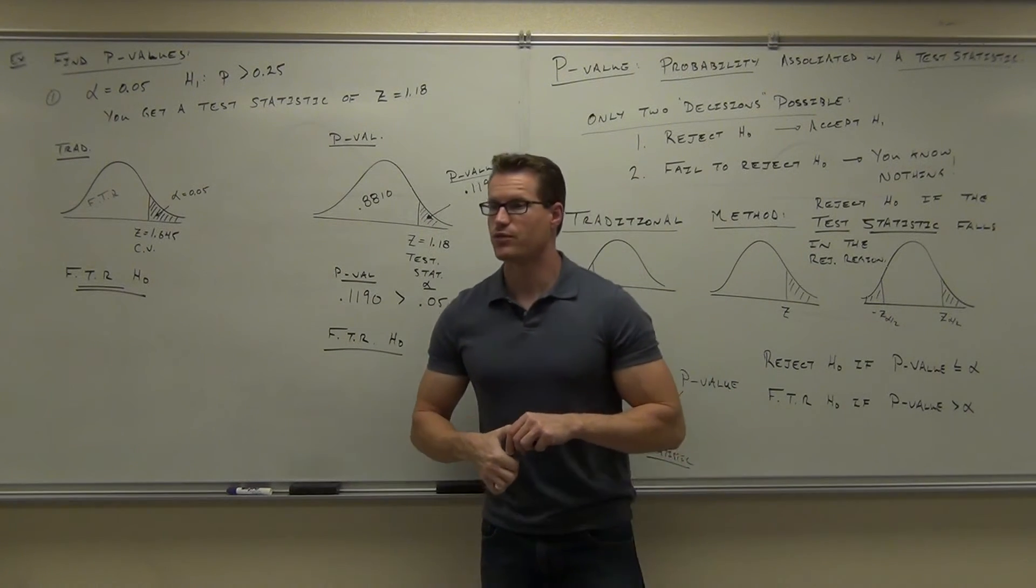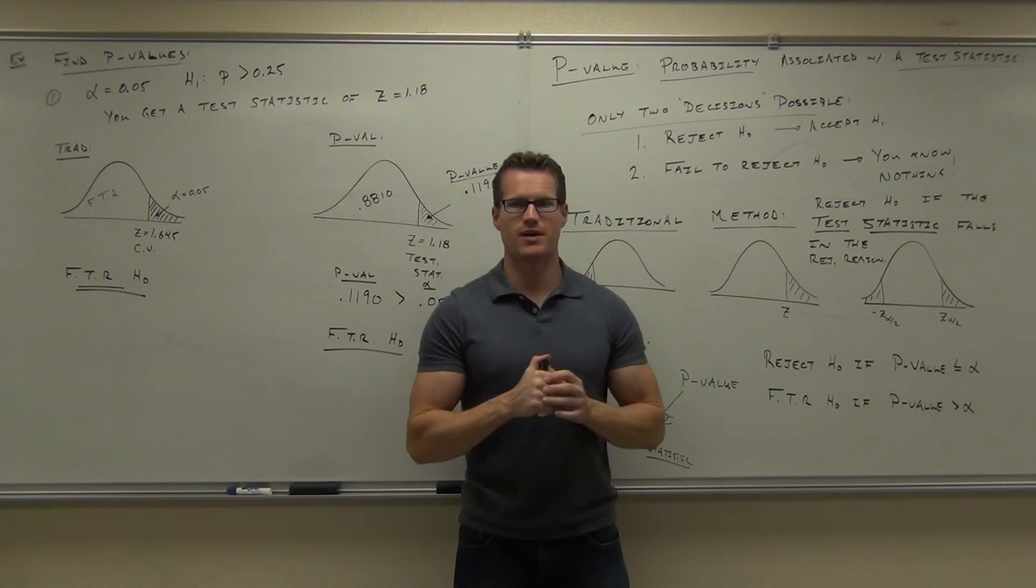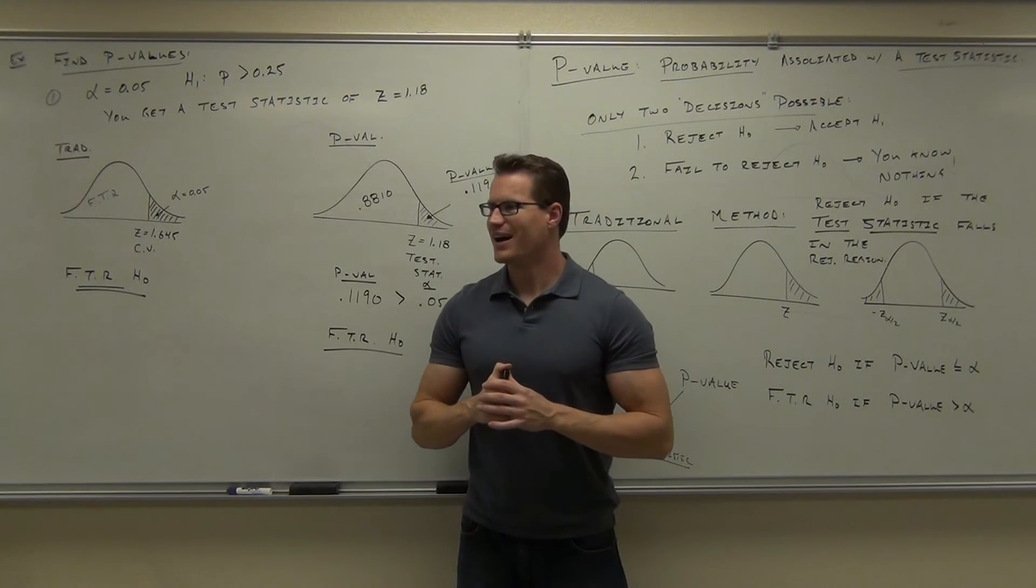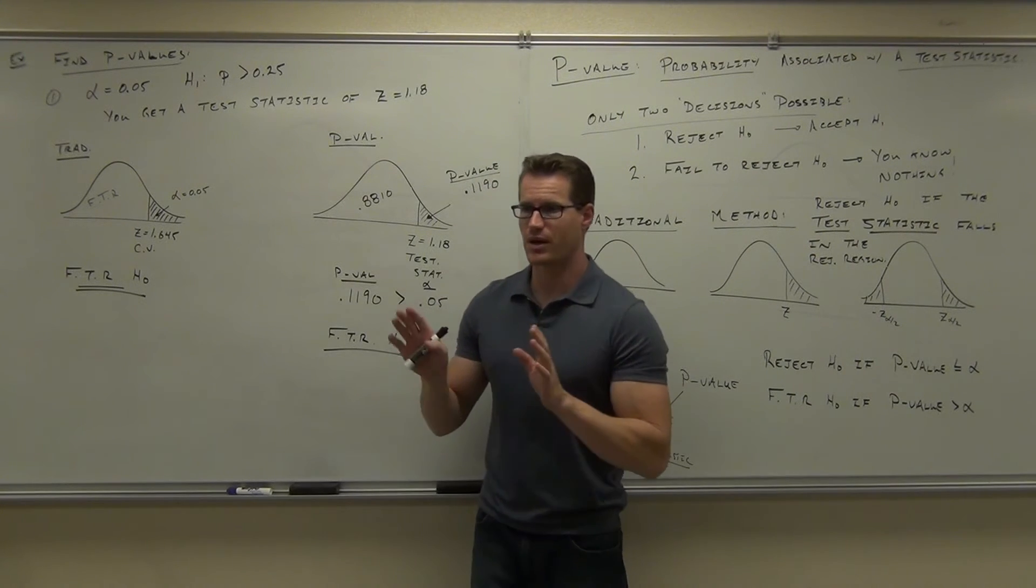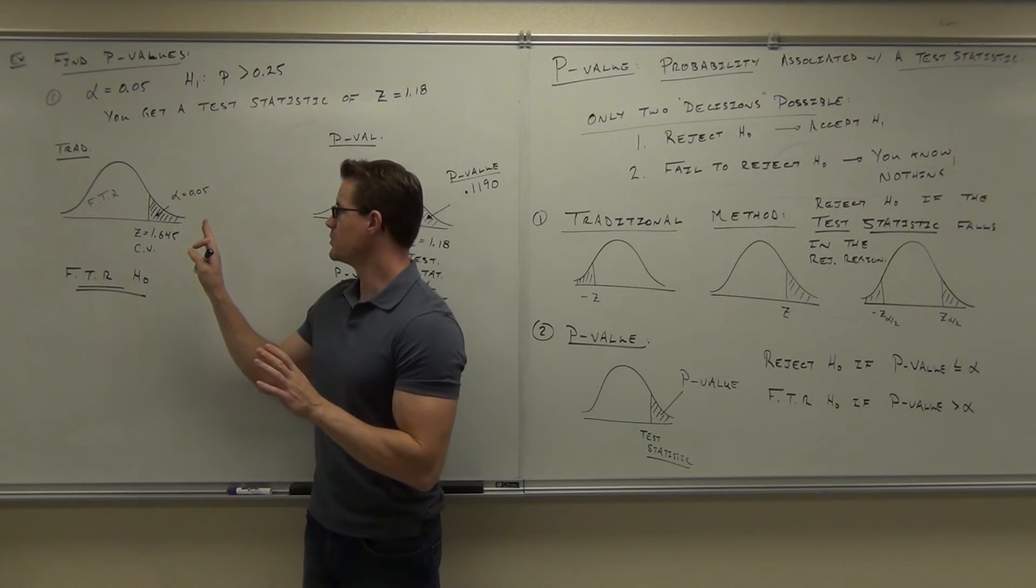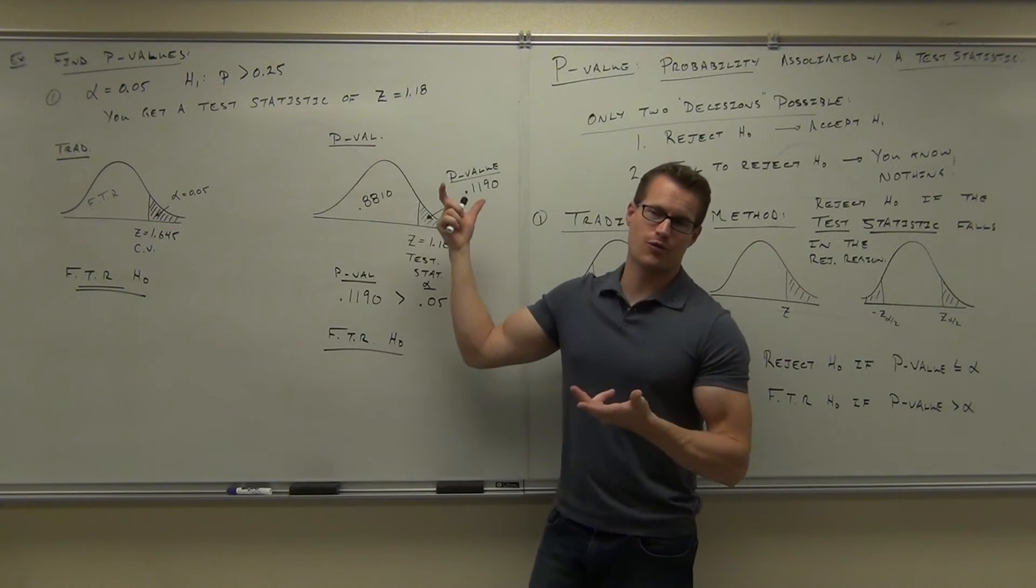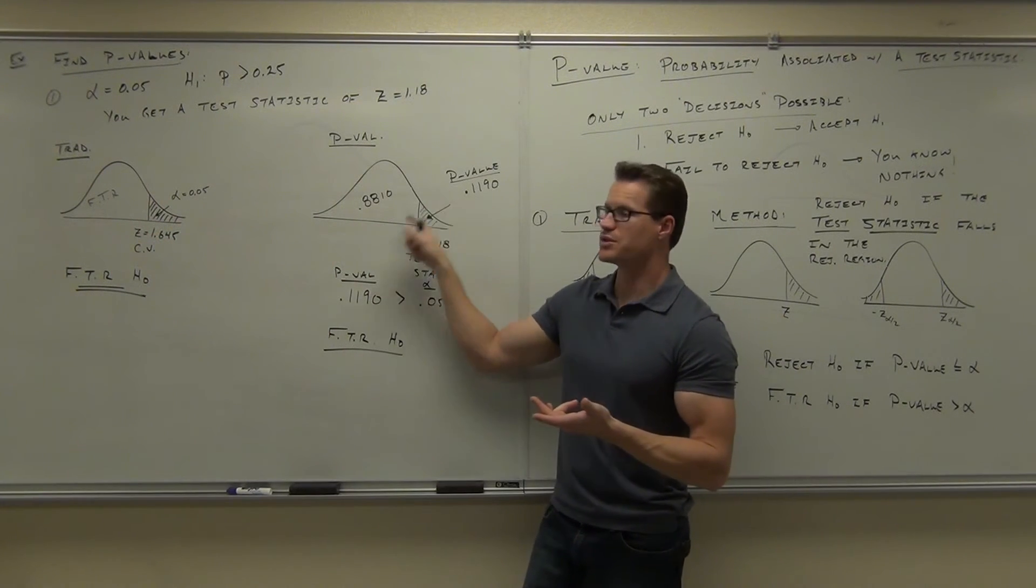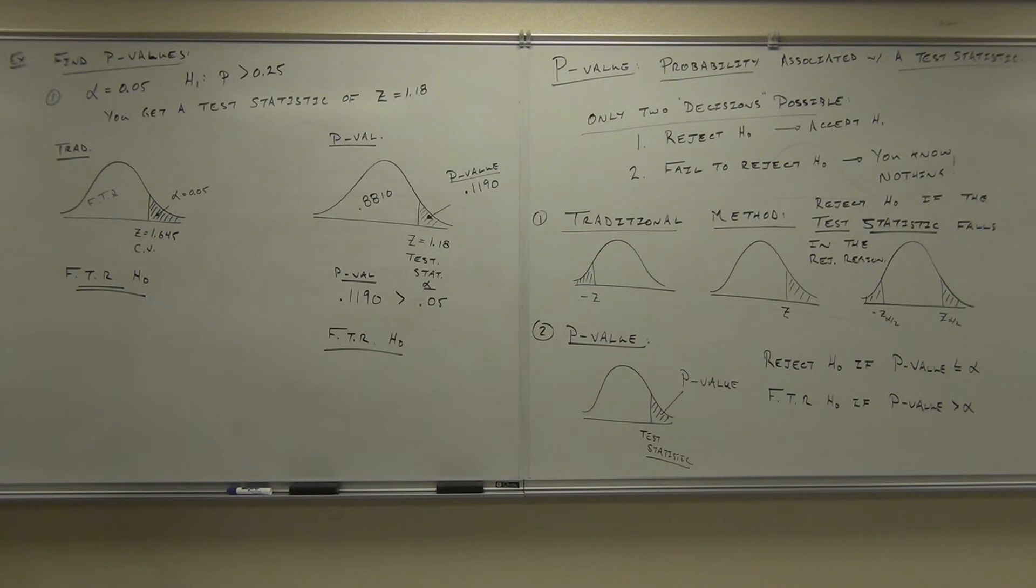So which one has a critical value, traditional or p-value? Which one has a p-value? Well, clearly p-value. In each case, you still have a test statistic though, right? It's just whether you're comparing a test statistic to the critical value or whether you're finding the area out from your test statistic and comparing it to your alpha.